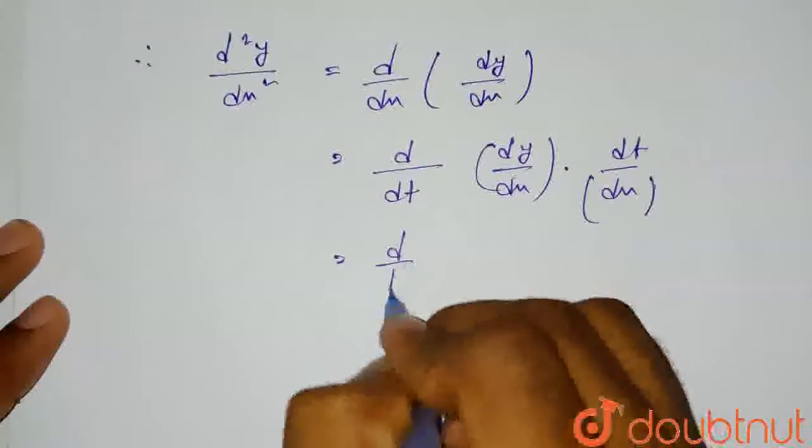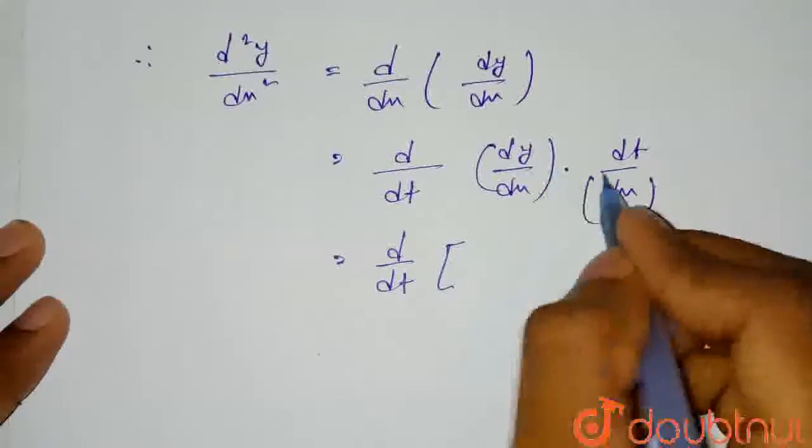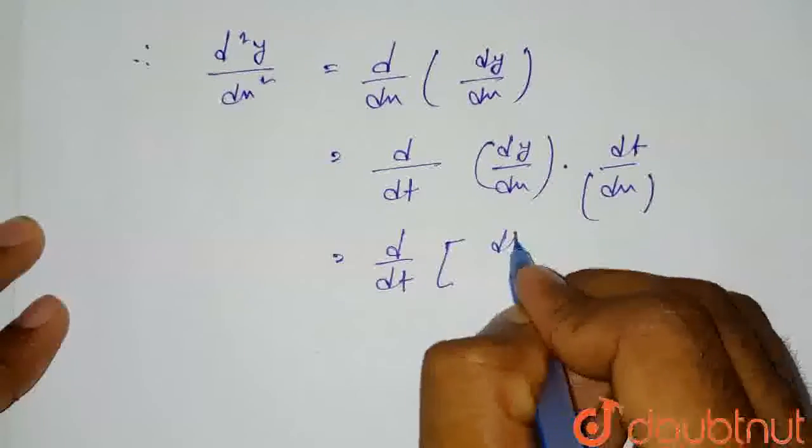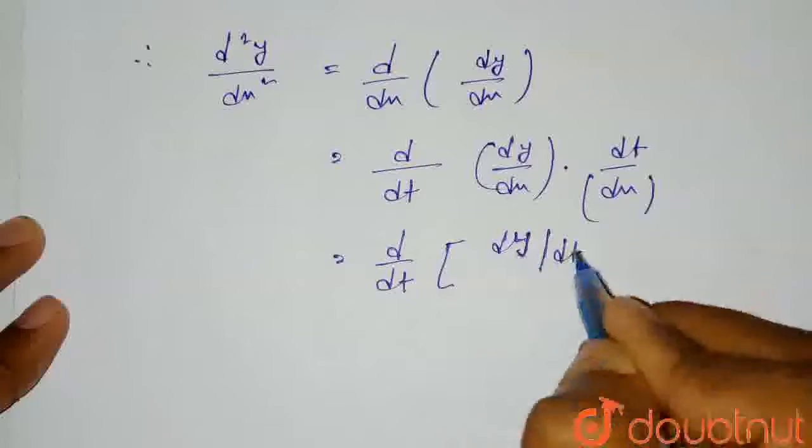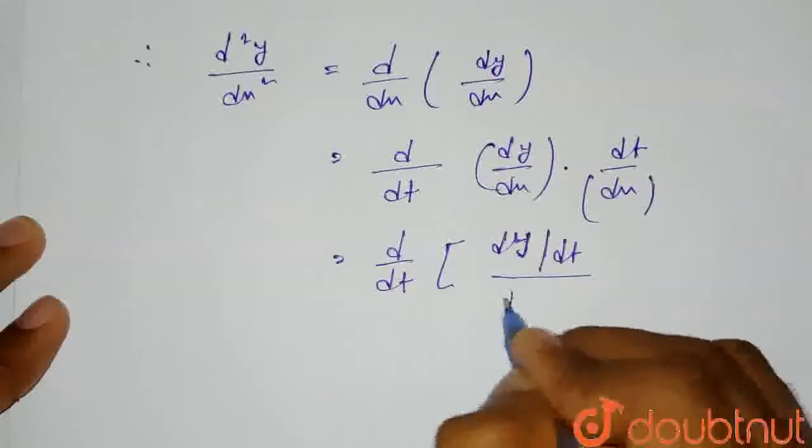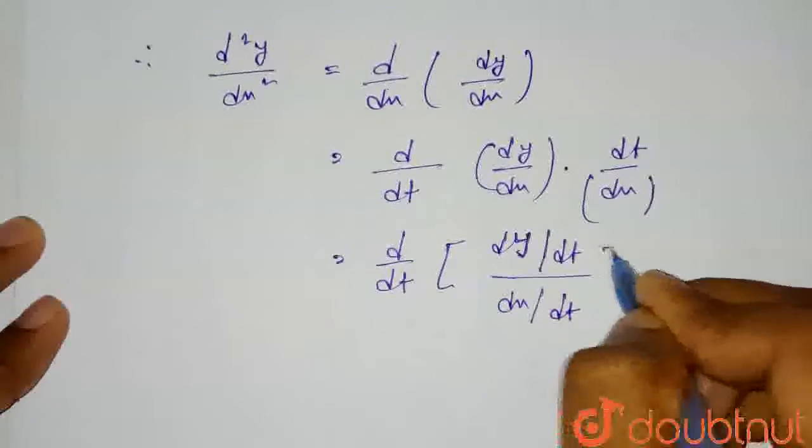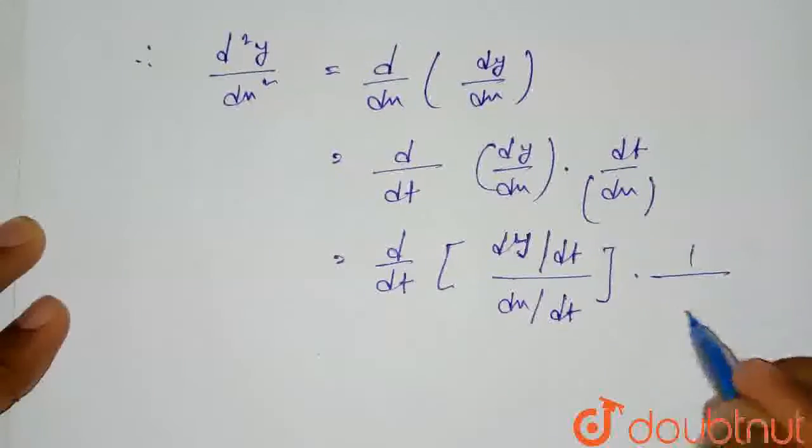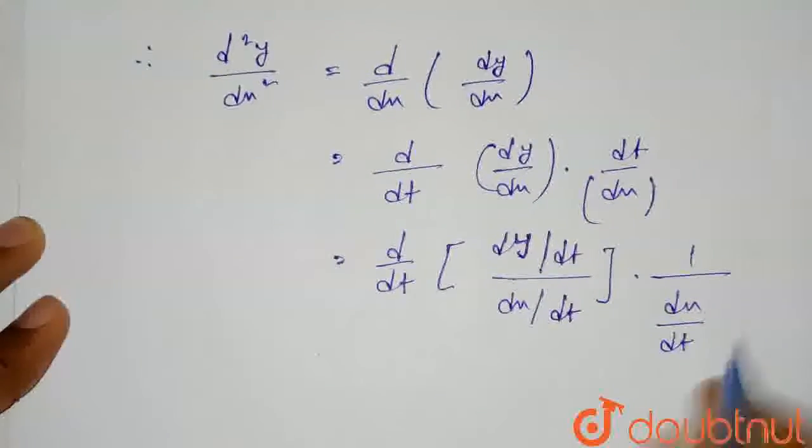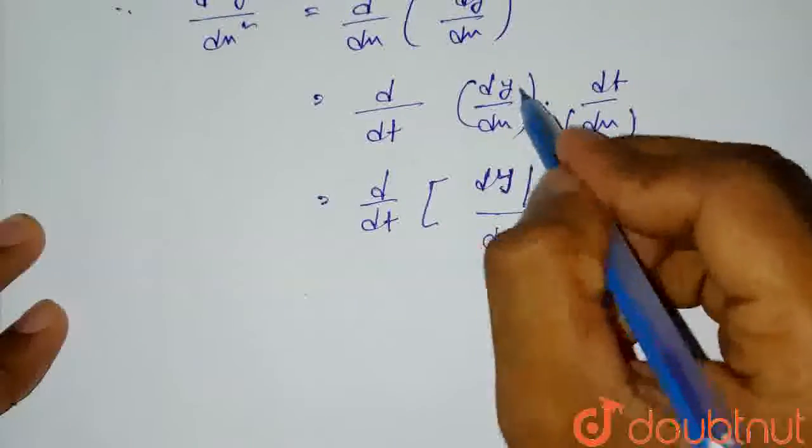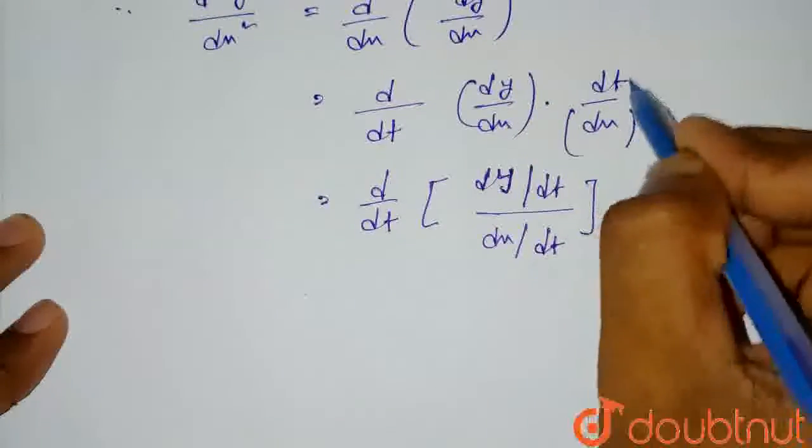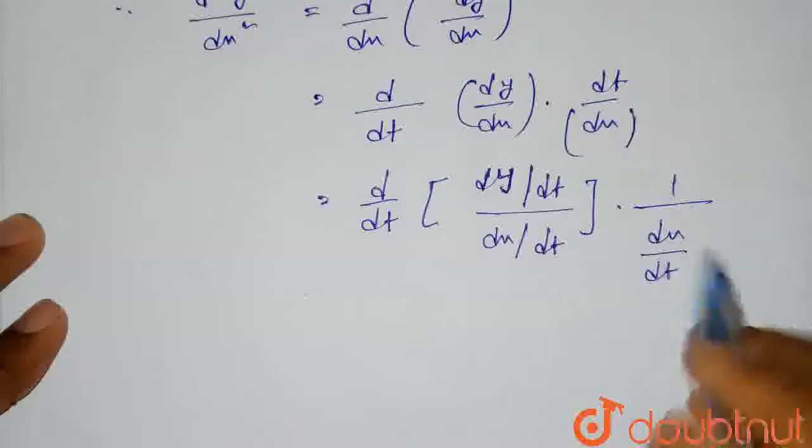So this will equal d/dt of (dy/dt divided by dx/dt) multiplied by 1 divided by dx/dt. Here we have divided both values by dt and written it as 1 divided by the reciprocal.